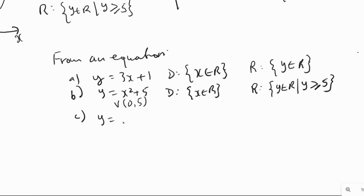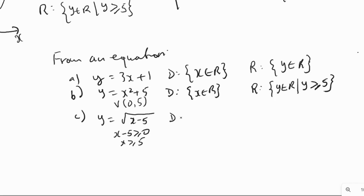For y = √(x − 5), whenever we have a square root, the expression under the radical cannot be negative. Therefore, x − 5 must be greater than or equal to 0, which gives x ≥ 5. So the domain is x belongs to R such that x is greater than or equal to 5.